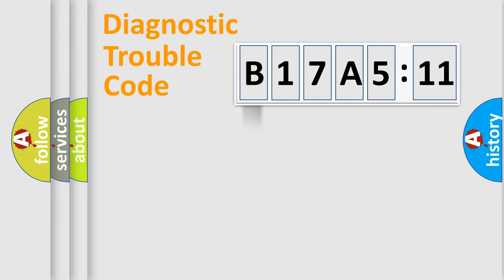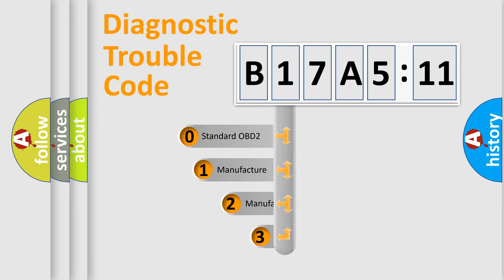Powertrain, Body, Chassis, Network. This distribution is defined in the first character code.